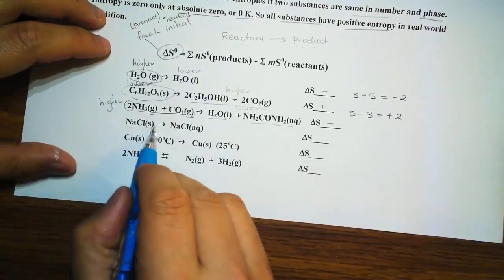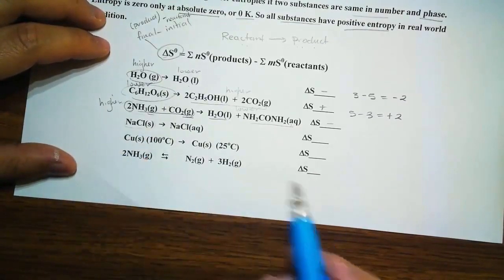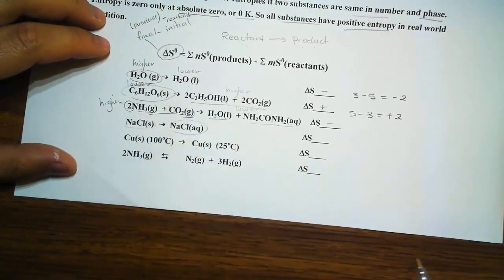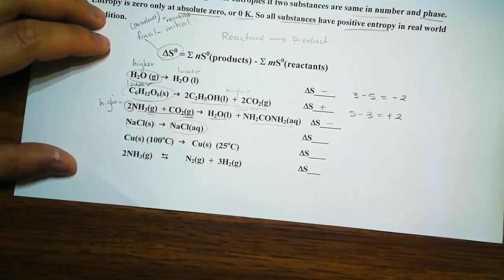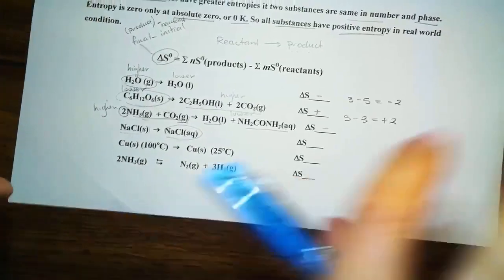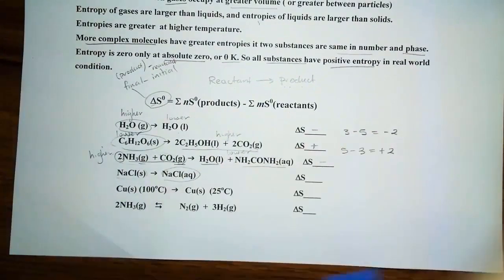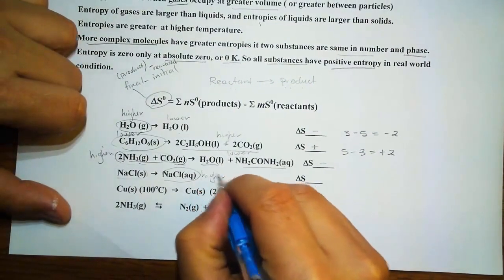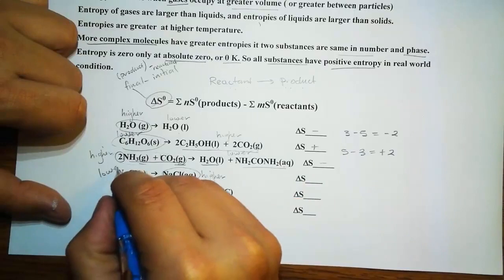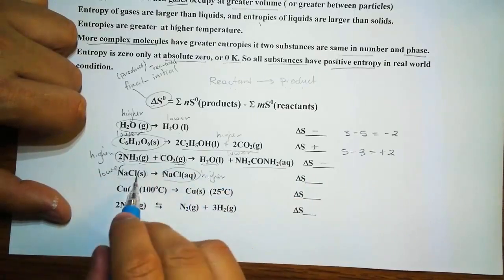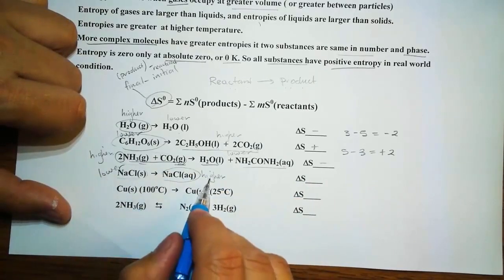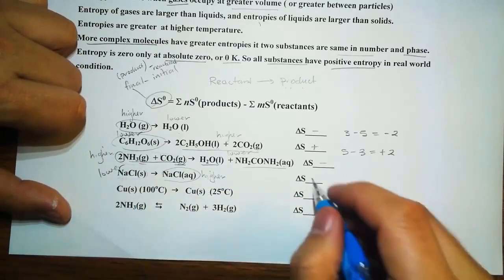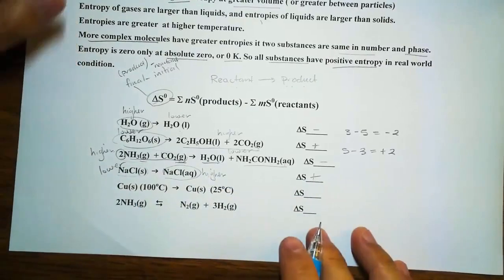Then here we have a solid going to an aqueous. Now think of aqueous. Aqueous is being dissolved in water. So therefore, you see this aqueous molecule will be dispersed more. So that tells you that this of course will have higher entropy. This will have lower entropy. So what's high minus low? A higher number minus a smaller number. Of course, that gives us a positive change of entropy.